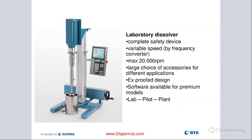On the Dispermat, it's very important to our processing that we have a shaft guard, which allows us to run the disperser without having any rotating or moving parts outside of the container. There's a little thumb screw that you can loosen and tighten to move that shaft guard up and down along the shaft to ensure the shaft is properly covered when you are dispersing your material.